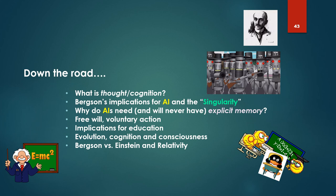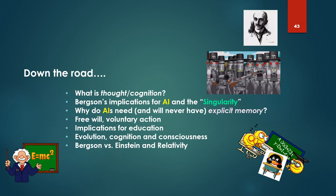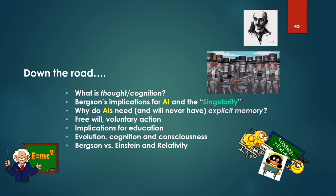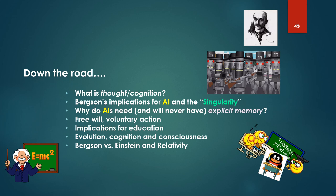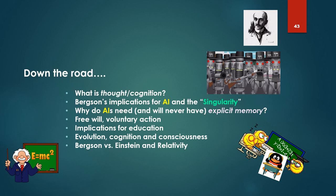Down the road we'll talk about what is thought, what is cognition, Bergson's implications for AI and the singularity. Why do AIs need and will never have explicit memory? That is, why is consciousness required for cognition? Free will, voluntary action, implications for education, evolution, cognition, and consciousness. And Bergson versus Einstein and relativity.